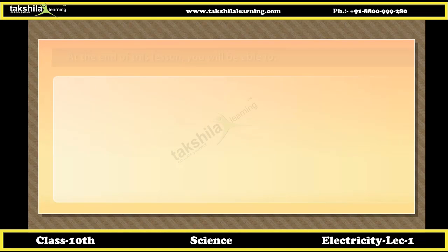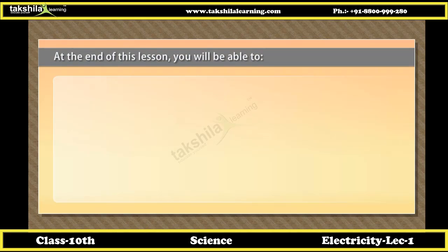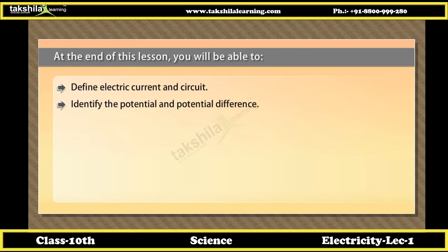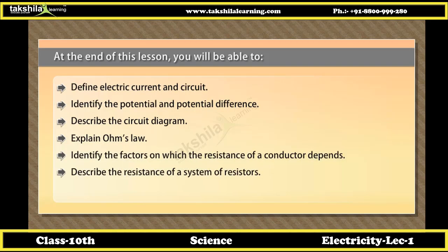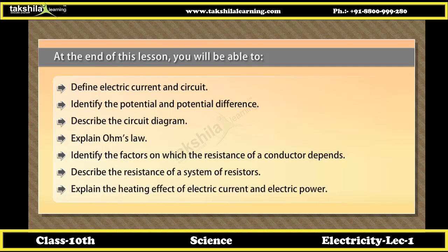Objectives. At the end of this lesson, you will be able to: define electric current and circuit; identify electric potential and potential difference; describe the circuit diagram; explain Ohm's Law; identify the factors on which the resistance of a conductor depends; describe the resistance of a system of resistors; and explain the heating effect of electric current and electric power.